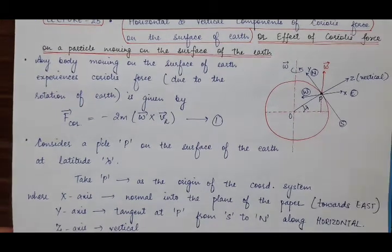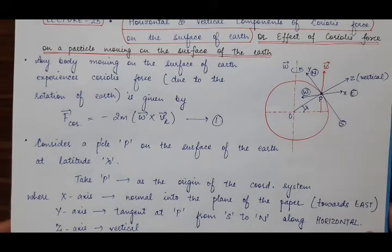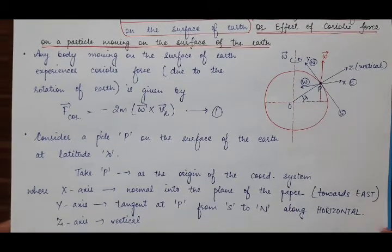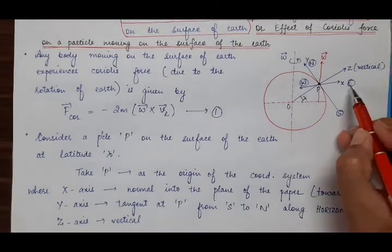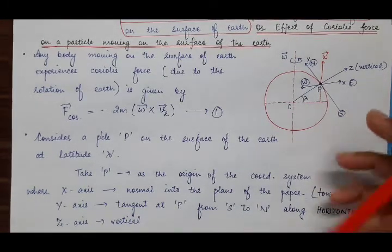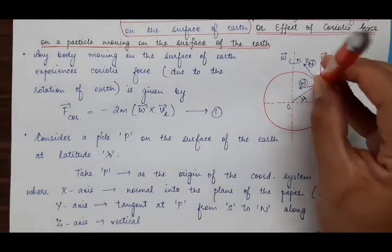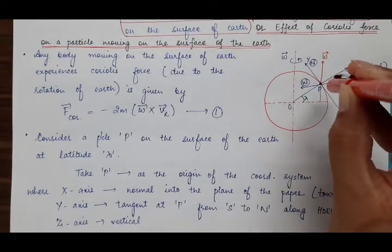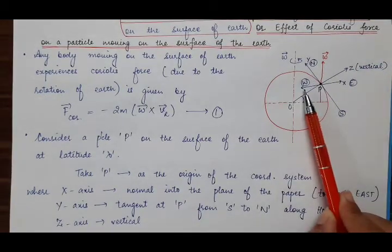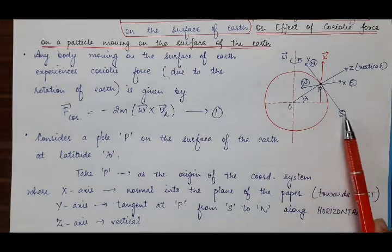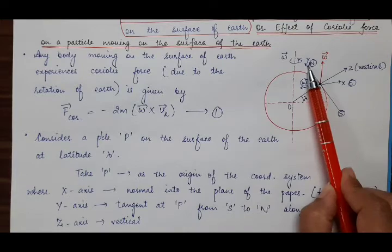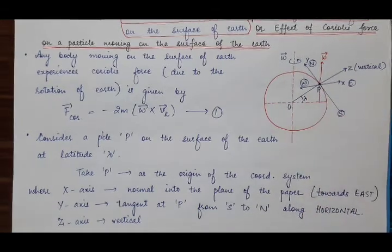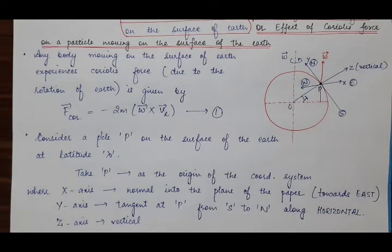So x-axis is the normal to the plane of paper and its direction is into the plane of the paper, which is east. Outwards from the plane of paper will be the direction of negative x-axis, which is towards west. This is south and this one is north. So y-axis is towards north and z-axis is the vertical.